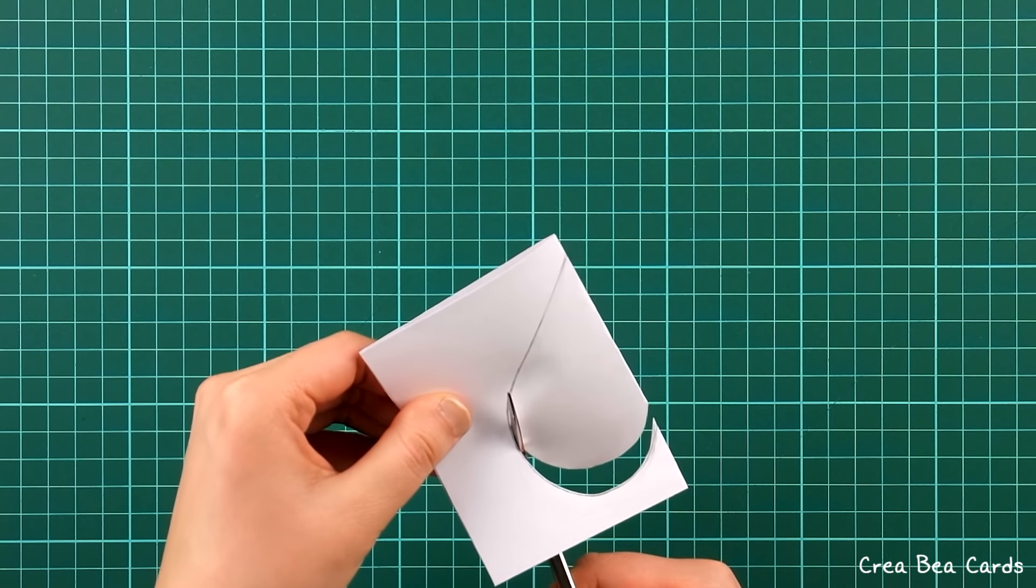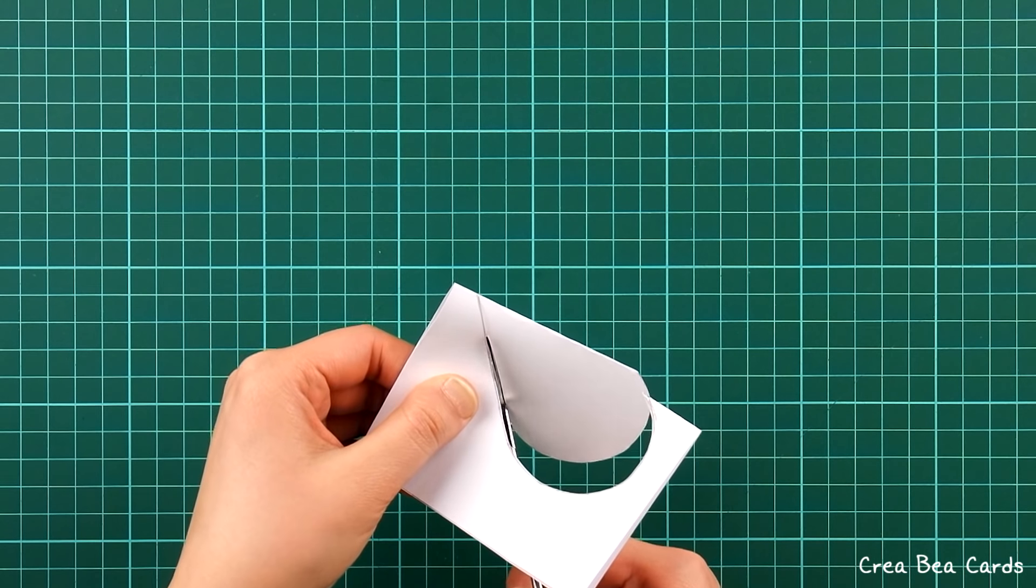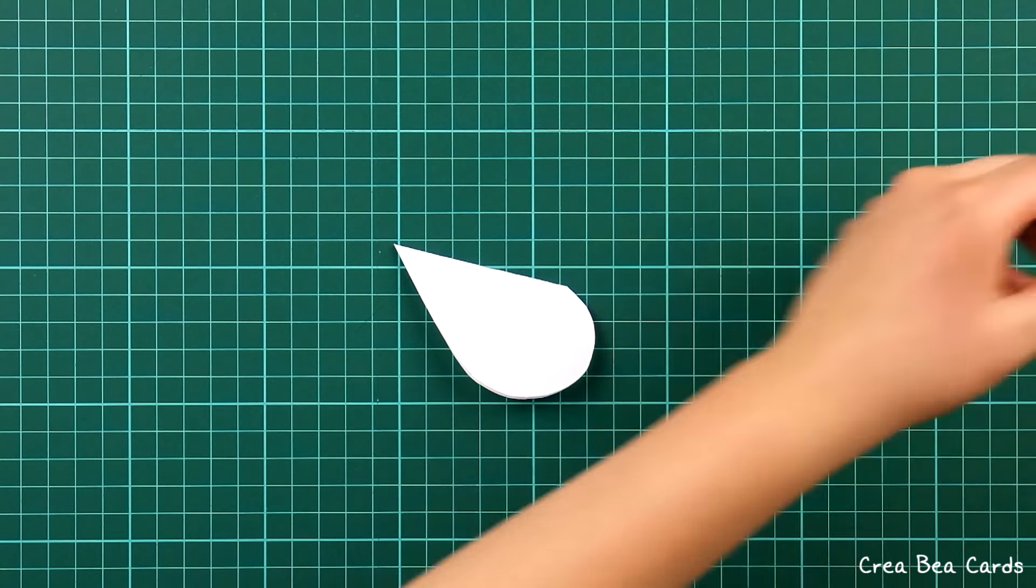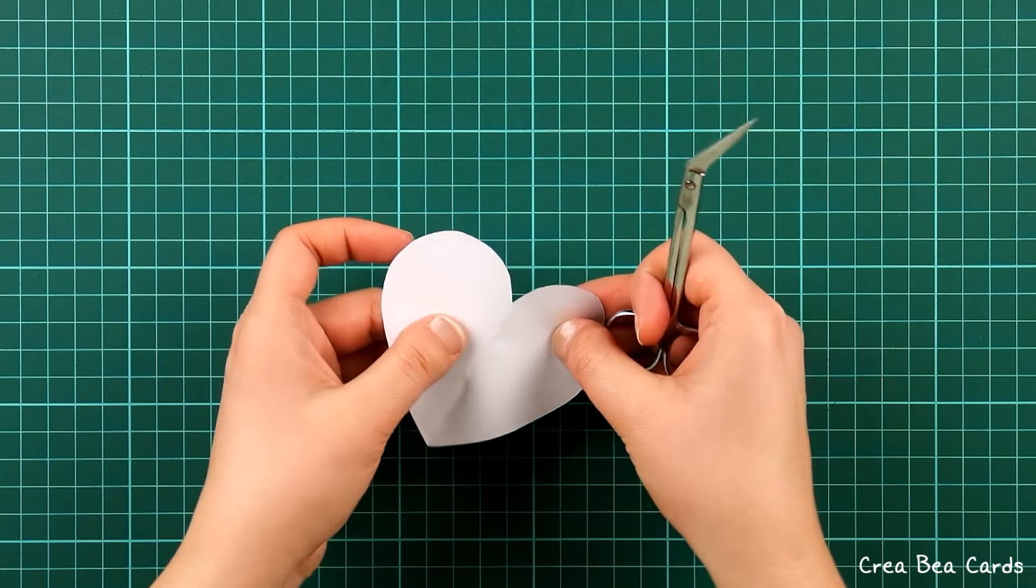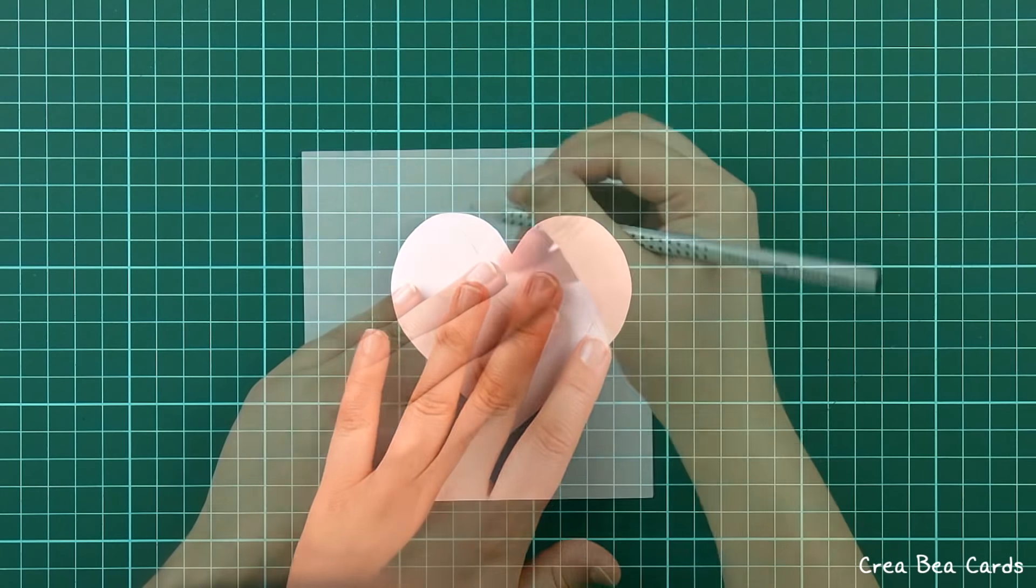Cut out the heart shape with the scissors. Unfold the heart shape and put it on the card front, then trace it with a pencil.